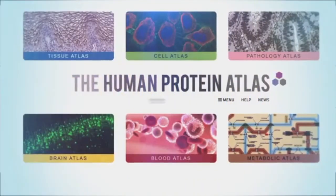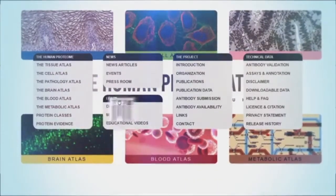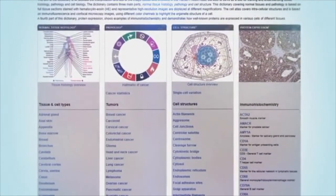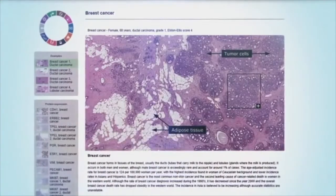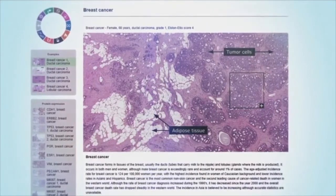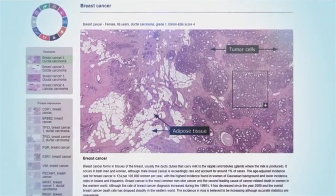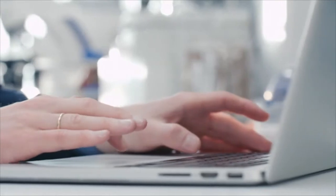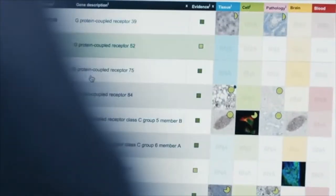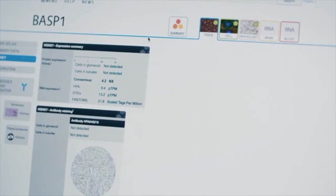The Human Protein Atlas also contains numerous tutorial pages and a dictionary to guide researchers interested in a particular part of the atlas. All the information in the protein atlas is provided without restrictions to allow scientists to get a holistic map of the human body.